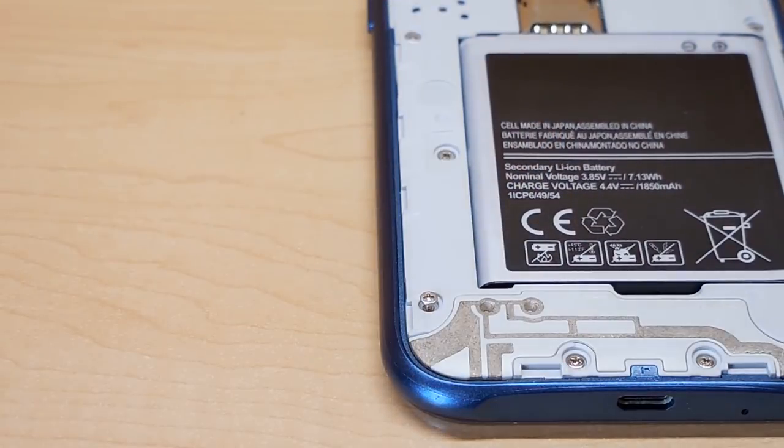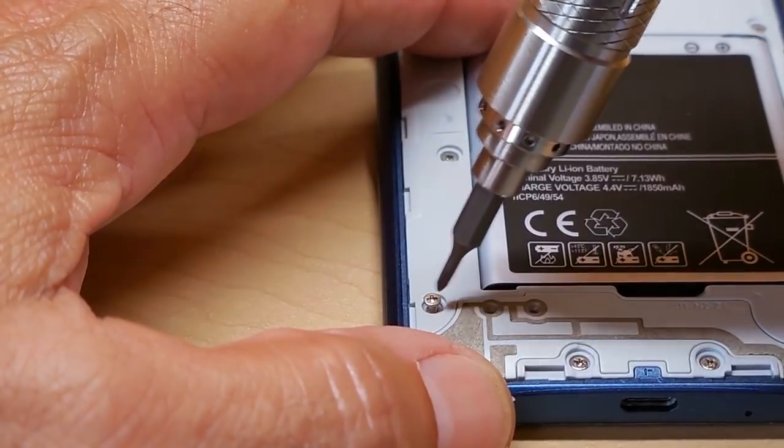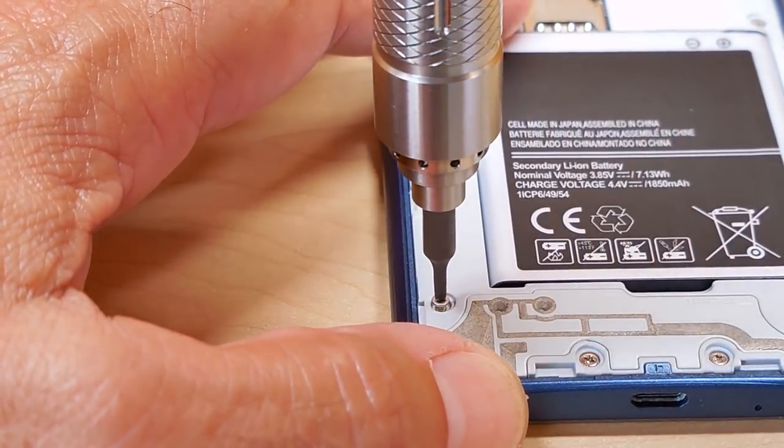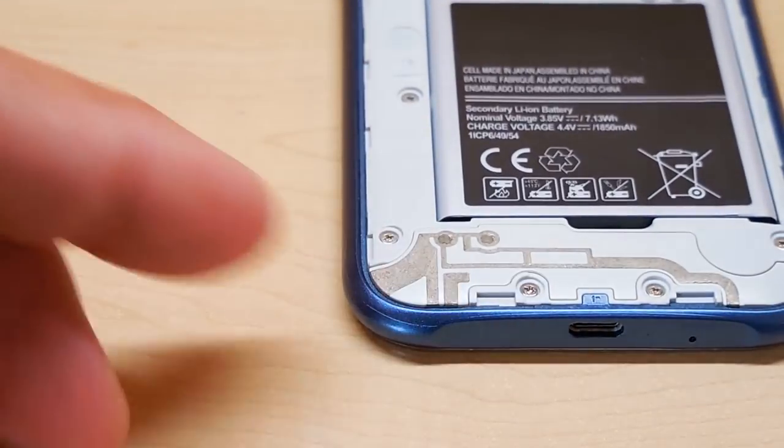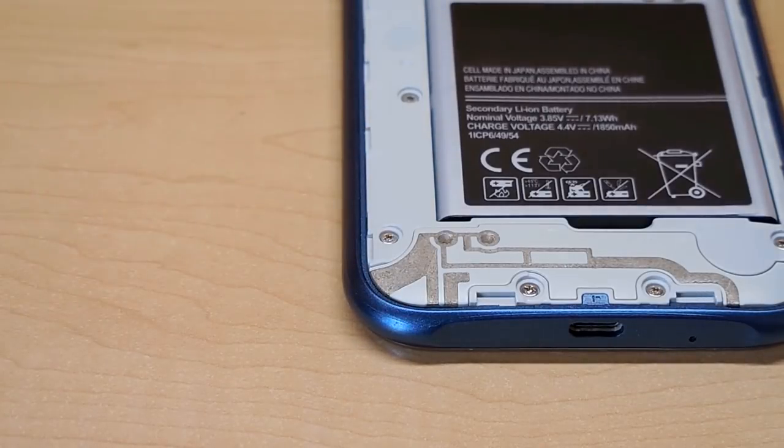Now let's put it back in using the torque setting which is number four. Okay, it should stop automatically. It's it, perfecto. Every single one of these will have the same torque when putting everything back together.